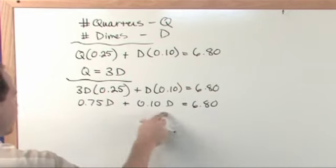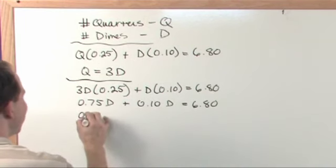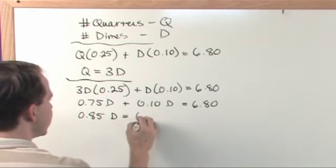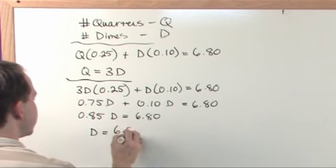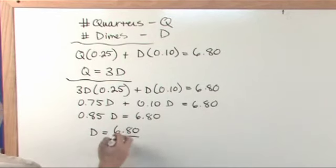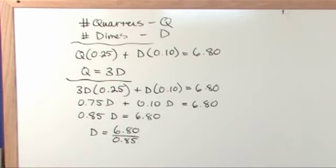Now you can add these two up just like anything that you've been doing. 0.75 plus 0.1 is 0.85 D is equal to $6.80. So D is going to be 6.80 divided by 0.85, because you just divide both sides by what's in front of D there.